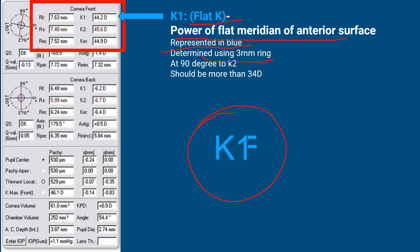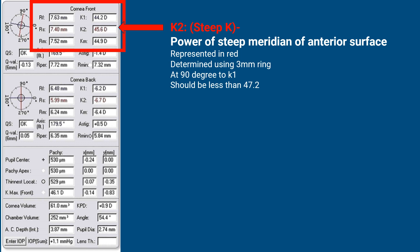K2 is denoted in red and it is the steep K. It is at 90 degrees to K1 and it should be less than 47.2 diopters. Anything more than 47.2 is considered suspicious.